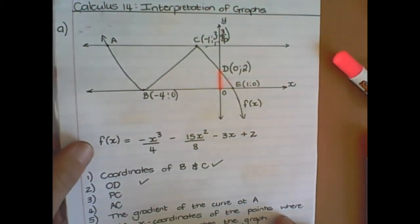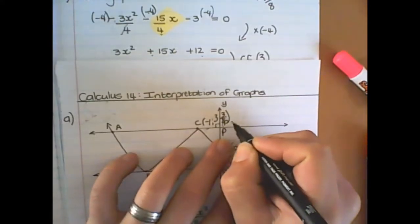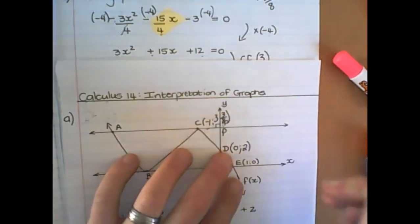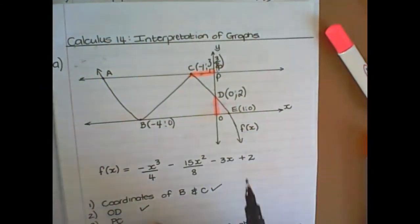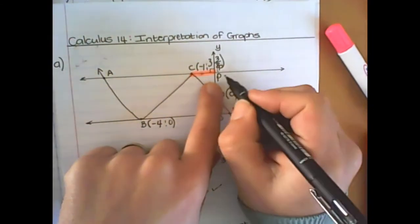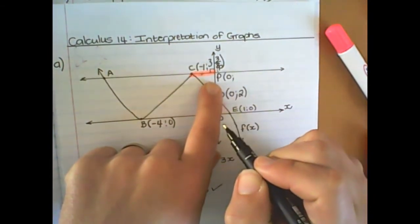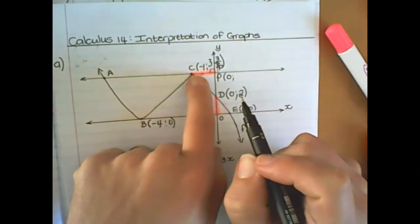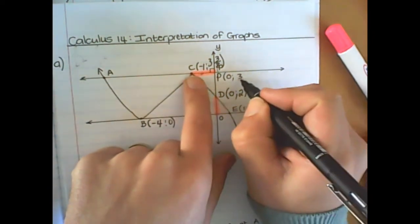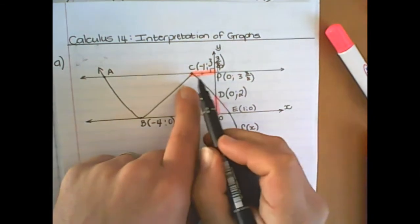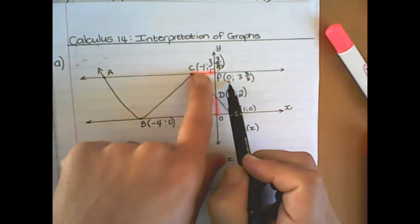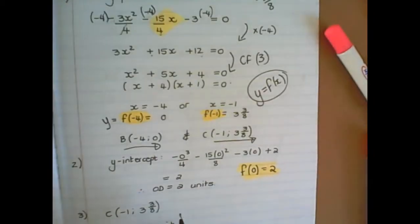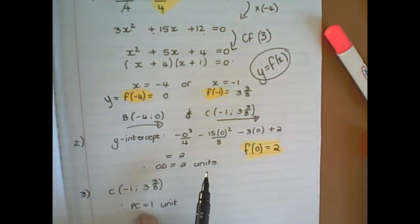Now the next question says, find the distance of p, c. So that is p. You can see I wrote over the p, the fraction part. So p, c would be this distance here. You don't have to calculate anything, because at p, you already know that x equals to 0. All right? And the y-value would be the same as the y-value for c, but you also don't need that, because it's horizontal. You just need that distance. And the distance between 0 and negative 1 is 1 unit. So you just write down 1 unit.